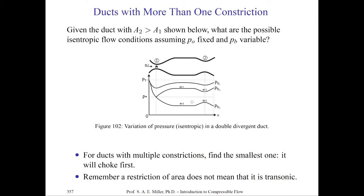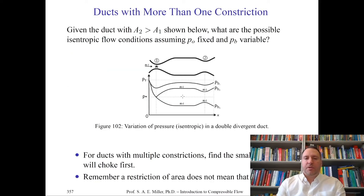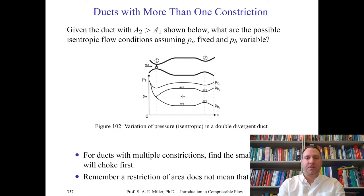To control the flow in the wind tunnel you might find it advantageous to change the areas of the nozzle and diffuser — that's why hydraulic rams are used to change the minimum area ratio. Also remember that a restriction of the area does not mean the flow is transonic. If the pressure ratios are not large enough you can never achieve supersonic flow — no matter what, if you don't hit the critical pressure ratio p* over p0, you can never achieve supersonic flow, regardless of your nozzle geometry.